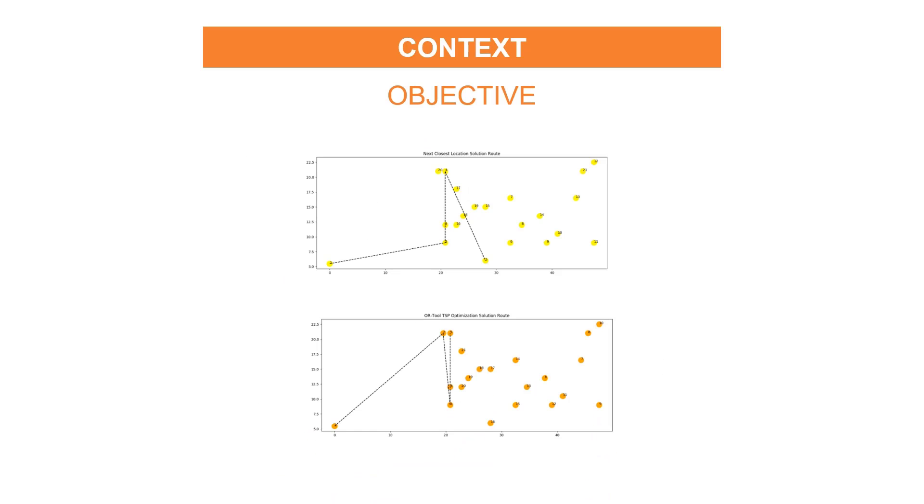The objective is to have animated graphs like the one below. You can follow the operator path along the picking route. And you can spot where the two algorithms are taking different directions. For example here, from the second location.